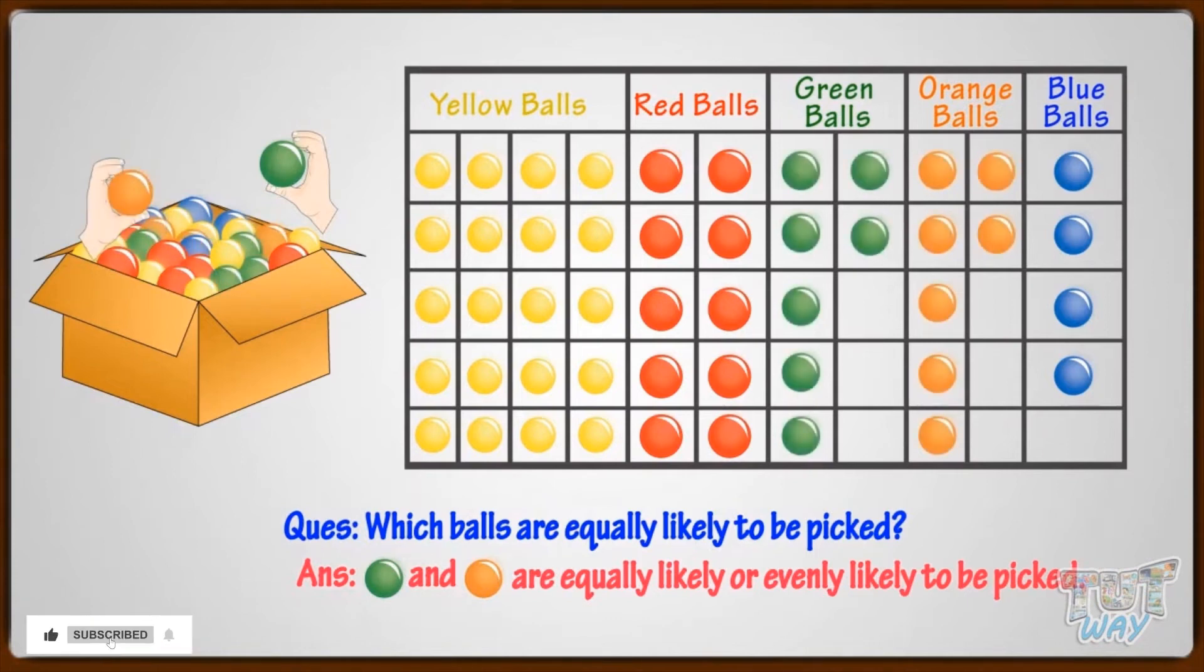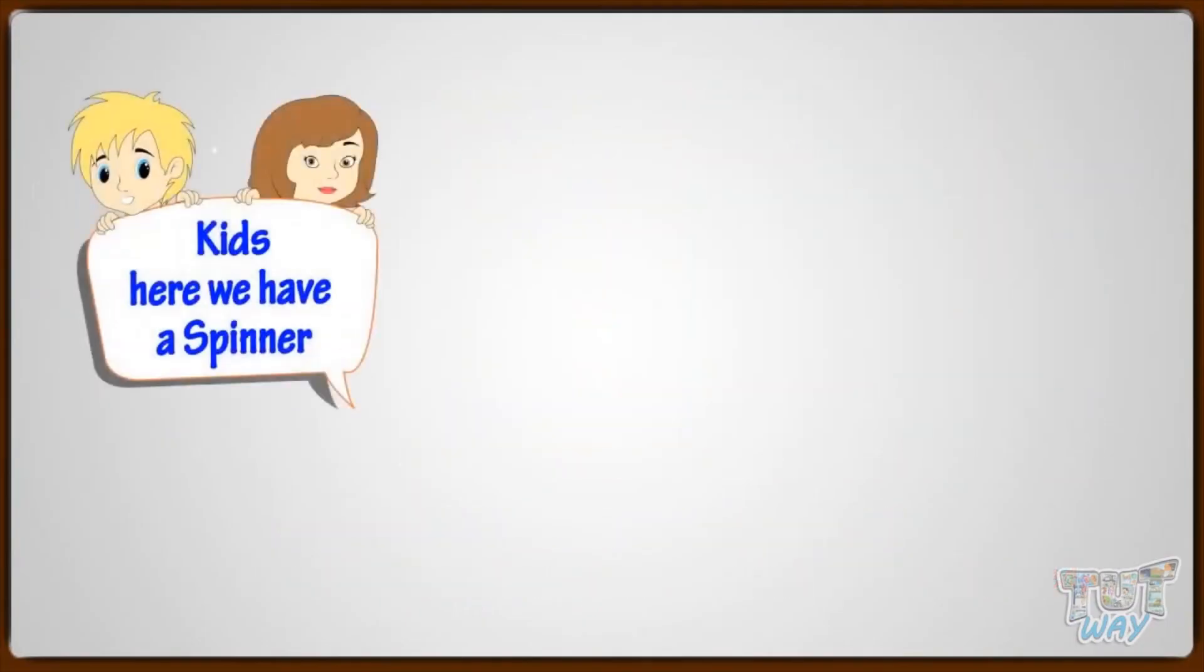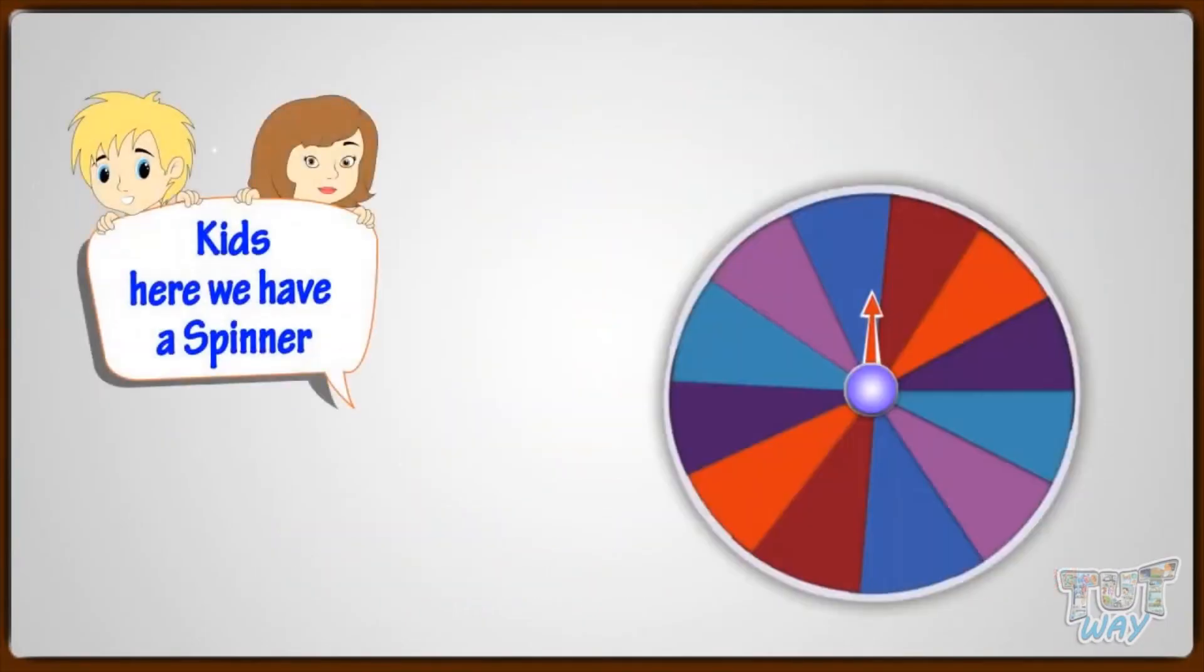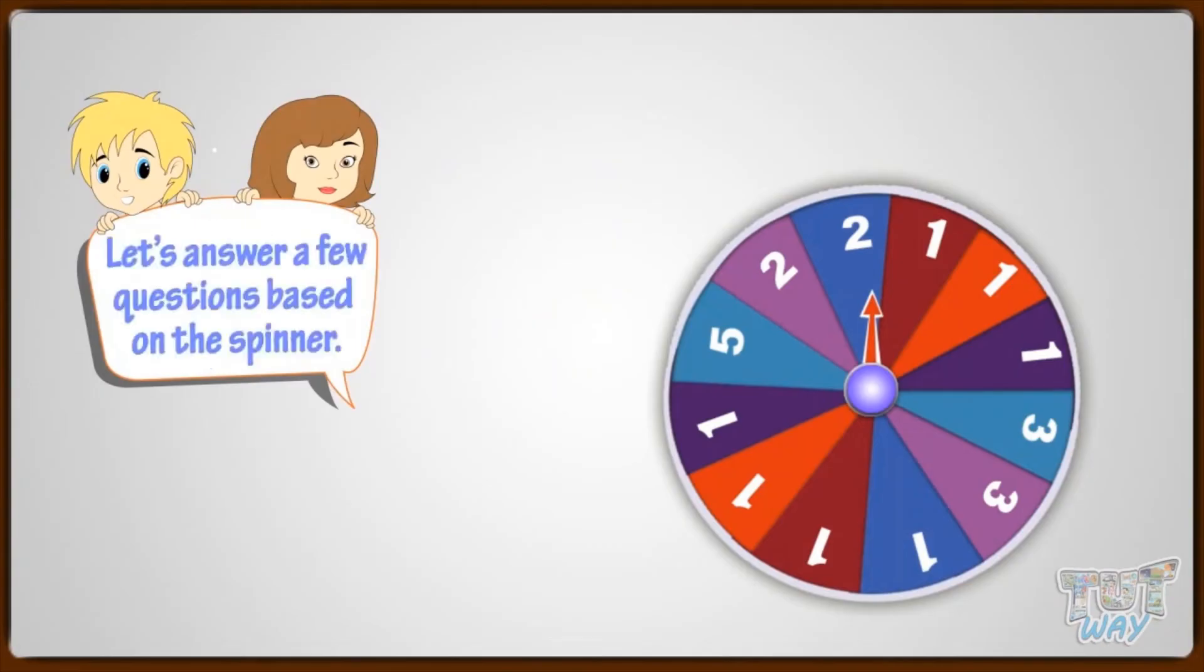So, kids, probability is the likelihood of something happening or not happening. Now, let's take another example where we can study probability. Kids, here we have a spinner with some numbers on it. Now, let's answer a few questions based on the spinner.